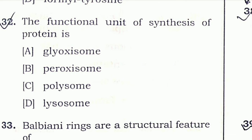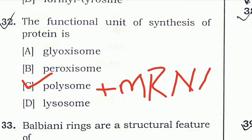Question 32: The functional unit of synthesis of protein is — glycosome, paroxisome, polysome, or lysosome? The right answer is polysome. Polysomes are a group of ribosomes attached to mRNA that help in the synthesis of protein by the translation process.